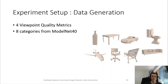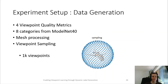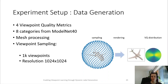We evaluate these quality measures on eight different object categories from the ModelNet40 dataset. To reduce the impact of the mesh quality on our computations, we use a mesh preprocessing pipeline to clean the meshes using existing mesh cleaning algorithms.